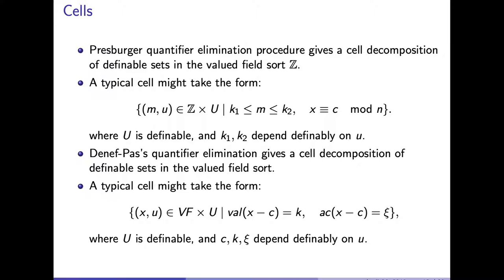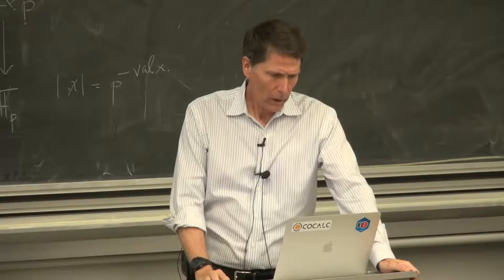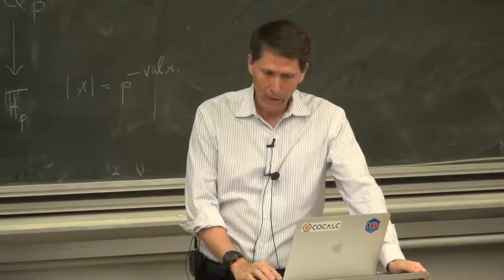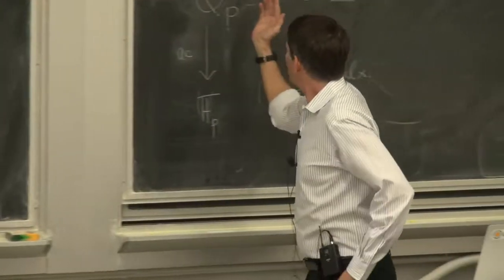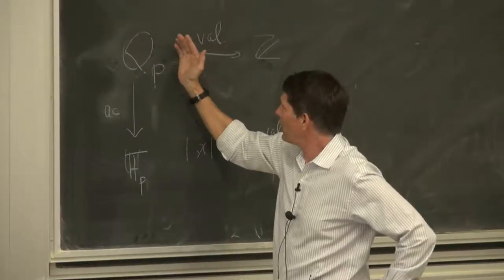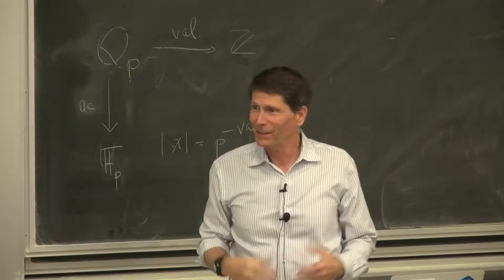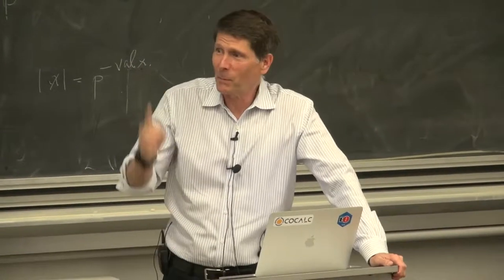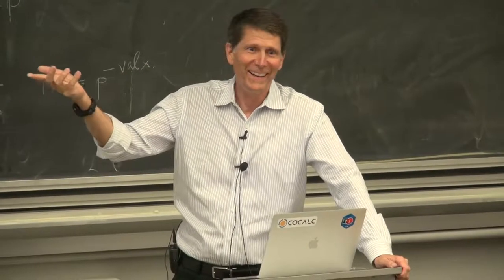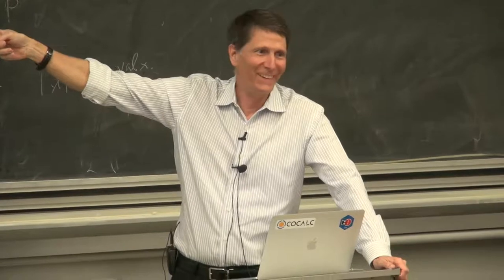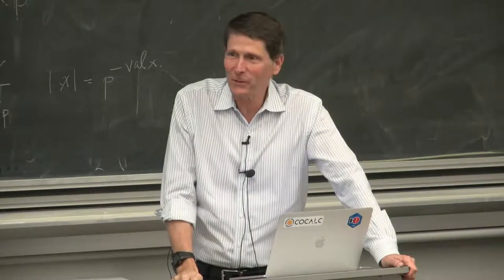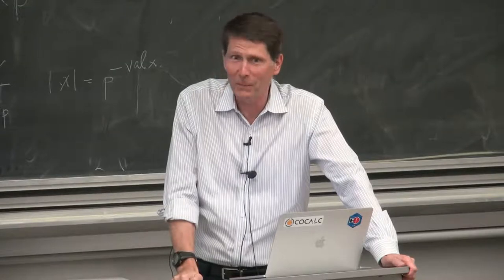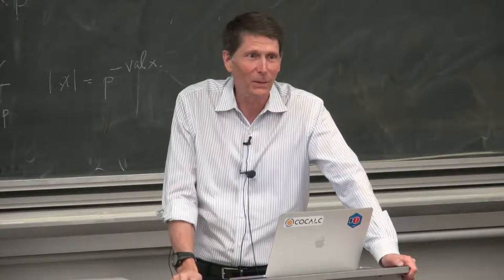How do we write down what the volume of something like this is going to be? Going back to my years as a graduate student computing lots of p-adic integrals, you know what the answer is there. So you just take the p and replace it by an L, and then you define the volume in this situation just to be the corresponding formula. You've got an abstract theory of integration that's independent of the prime p because we've replaced p by L.